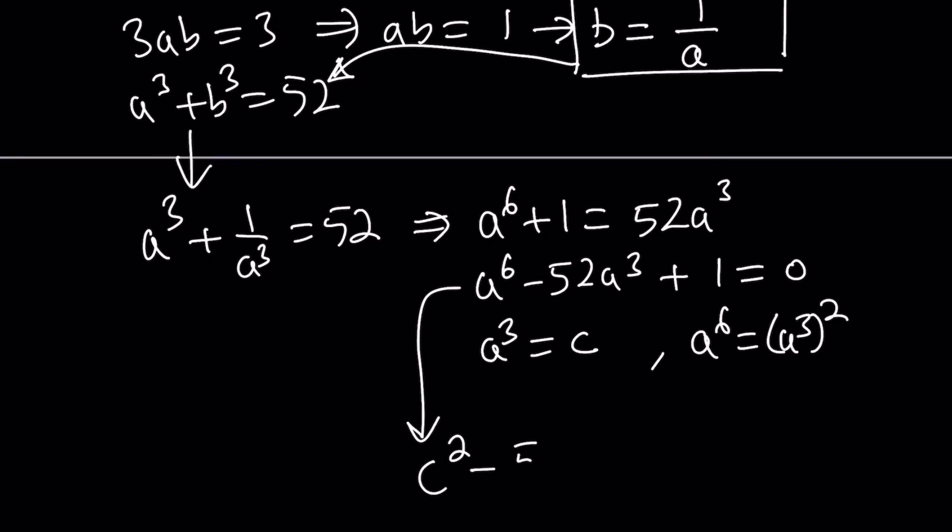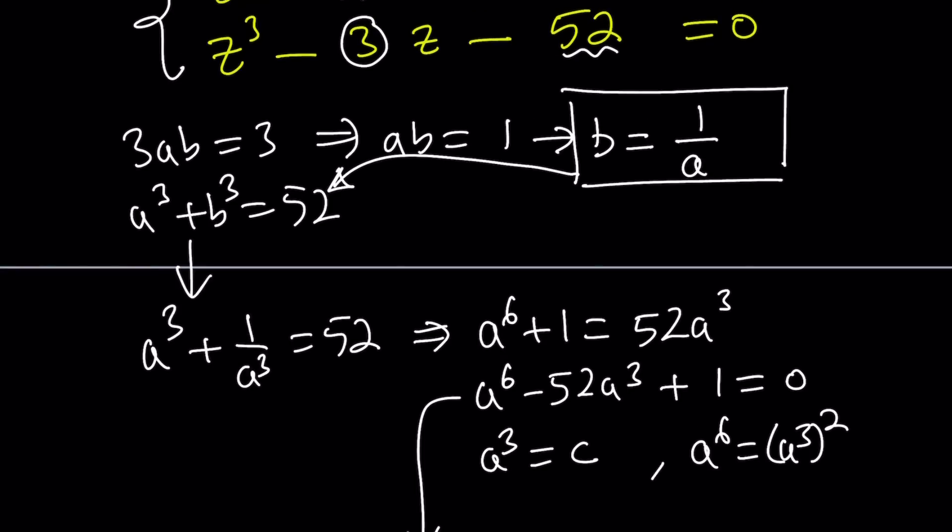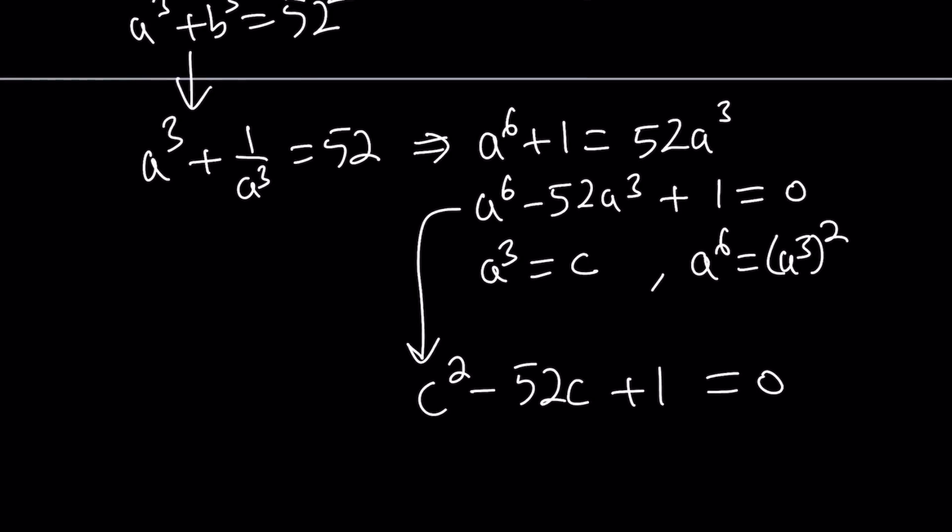So this gives us the following: c squared minus 52c plus 1 equals 0. The whole idea is collapsing this or turning this into a quadratic, because quadratics we know how to solve. There's a formula. And that's how we solve it. With the quartic, you can turn it into a cubic which you can solve by turning that into a quadratic.